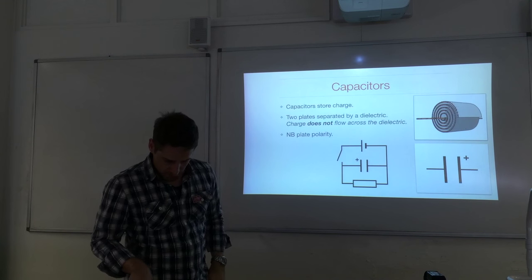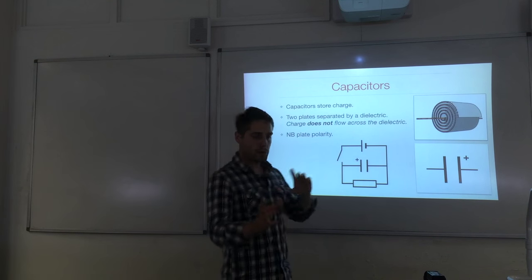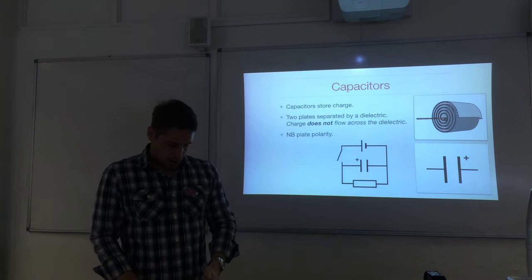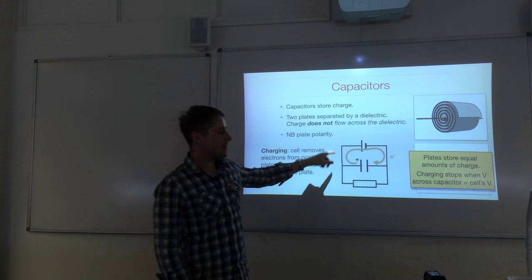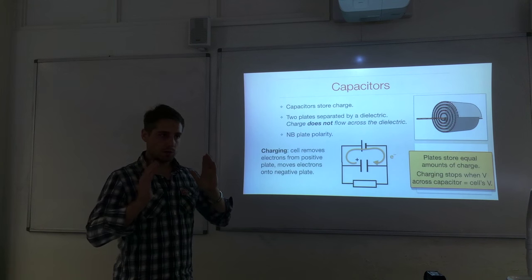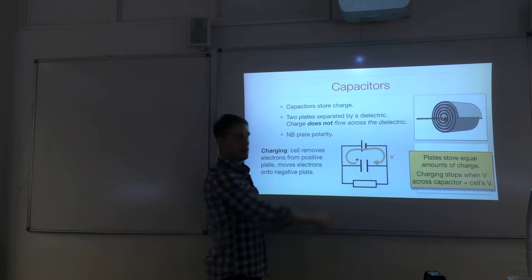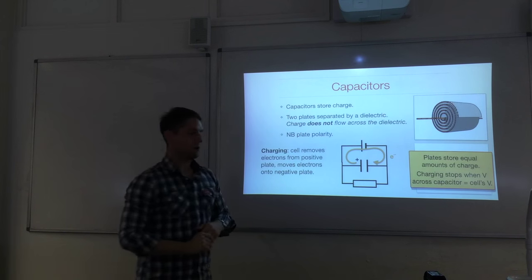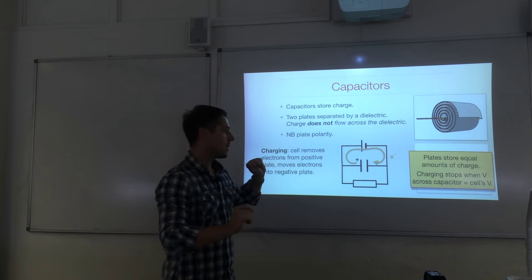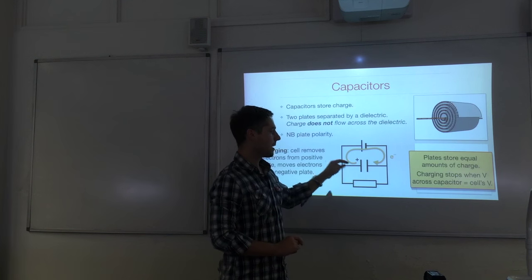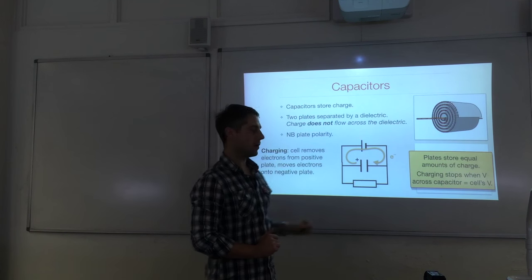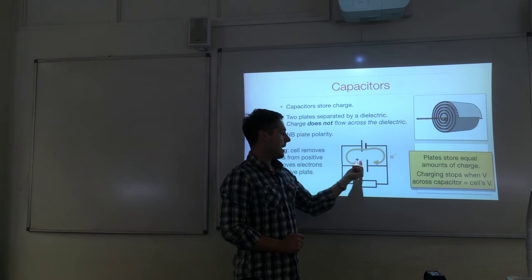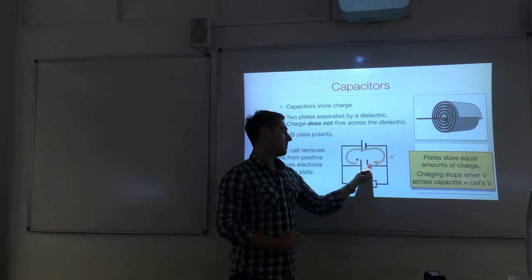Equal amounts of charge are stored on the plates — one storing positive charge and the other negative — but the magnitude of the charge stored is the same for both. When we close the switch, charging happens because the cell forces electrons off of the positive plate and forces electrons onto the negative plate. By forcing electrons off, we're left with positive charge on that plate, and the amount of positive charge equals the amount of negative charge forced onto the other plate.